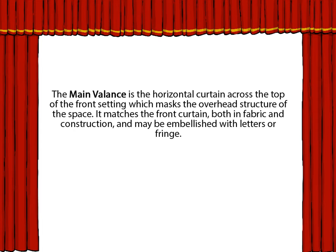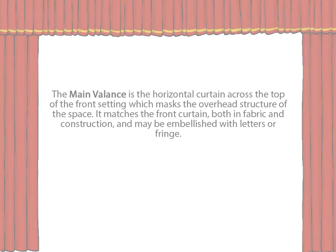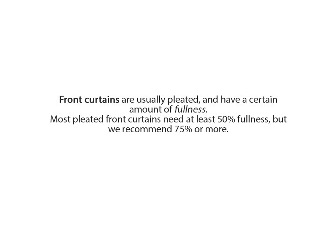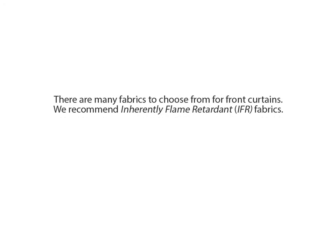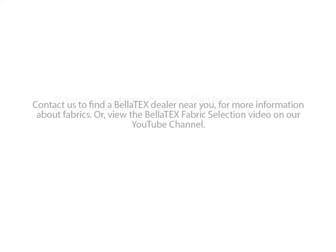The Main Valance is the horizontal curtain across the top of the front setting which masks the overhead structure of the space. It matches the front curtain both in fabric and construction, and may be embellished with letters or fringe. Front curtains are usually pleated and have a certain amount of fullness. Most pleated front curtains need at least 50% fullness, but we recommend 75% or more. There are many fabrics to choose from for front curtains. We recommend inherently flame retardant, or IFR, fabrics. Contact us to find a Bellatex dealer near you for more information about fabrics, or view the Bellatex fabric selection video on our YouTube channel.